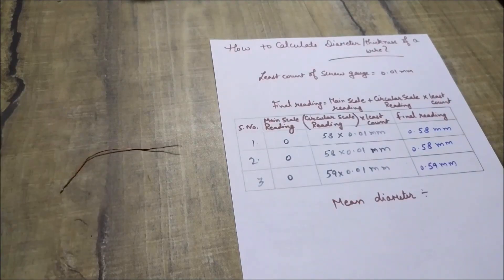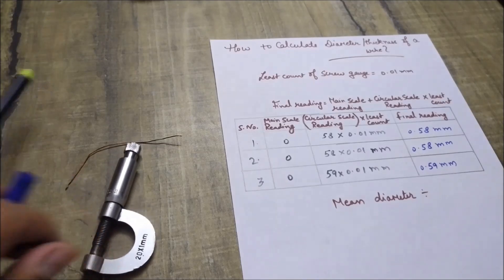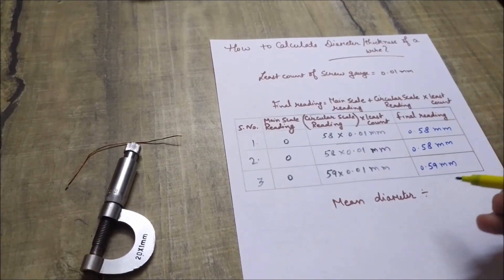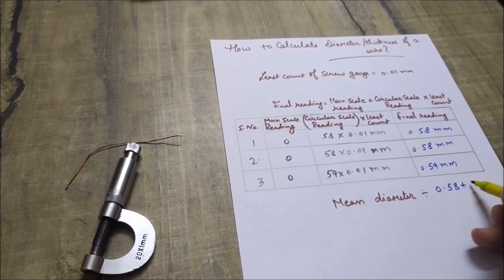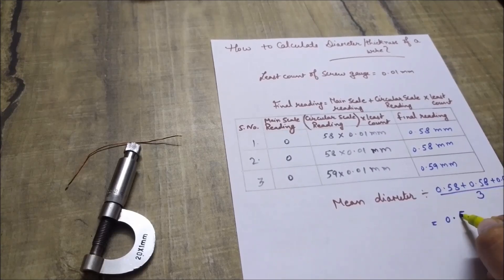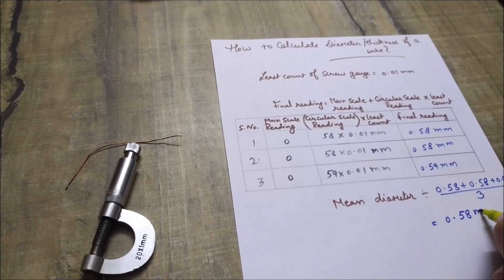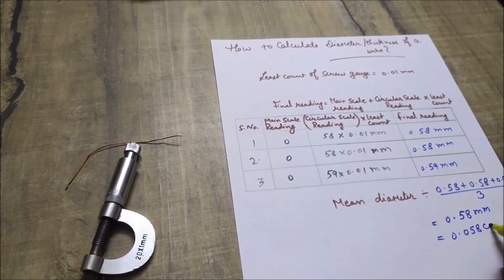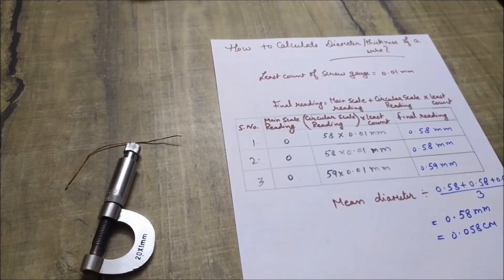Now students, we have just filled down this table. And now we will simply take the mean of all these observed readings. And hence we will get our diameter as it comes out to be 0.58 mm, or you can say 0.058 cm. This is your reading students.